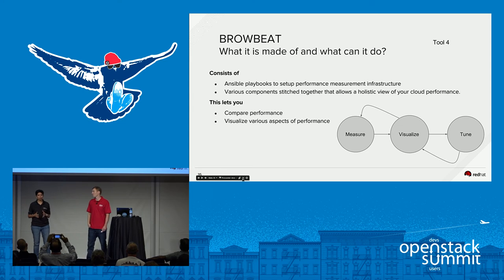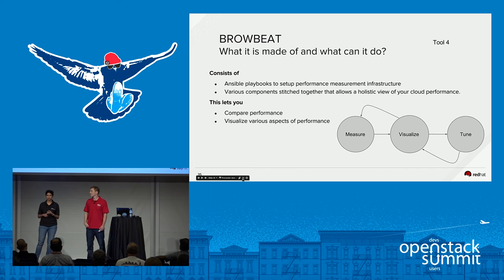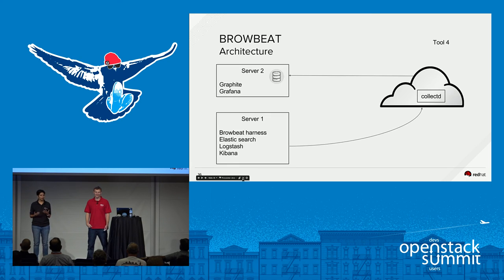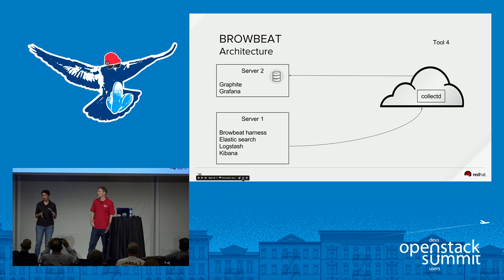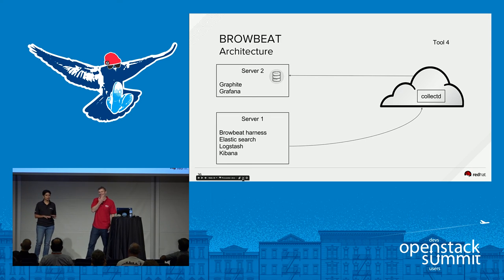BrowBeat is really a set of Ansible playbooks that helps you create a performance measuring infrastructure — not just information about your cloud, but holistic information about everything about your cloud. Anyone trying to tune anything needs to first measure, visualize, change, and redo those steps many times. BrowBeat helps you do exactly that. My BrowBeat setup consists of the cloud itself, a server with the BrowBeat harness, Elasticsearch, Logstash, and Kibana, and another server with Graphite and Grafana. Graphite is the database that collects statistic information from the cloud, and Grafana is the graphing tool. Just a disclaimer — this is not a recommended architecture; I was scavenging for hardware. It's recommended that all these pieces have servers of their own, but it worked out. I also had CollectD running on the cloud, which sends statistic data back to the BrowBeat infrastructure.